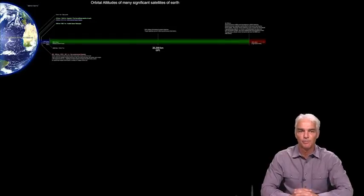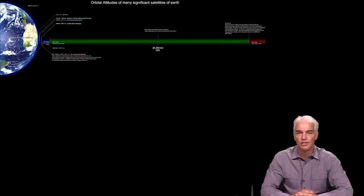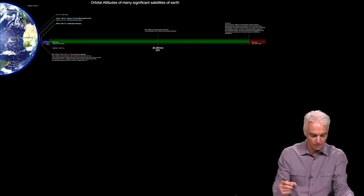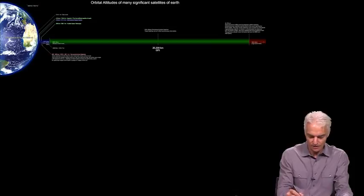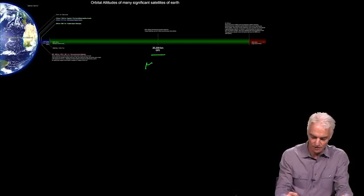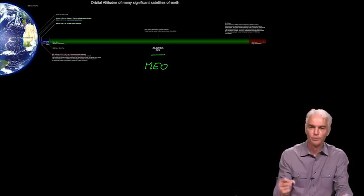So you'll remember this picture shows you the location or at least the altitude of all satellites, and right in the middle we have GPS in a medium Earth orbit.